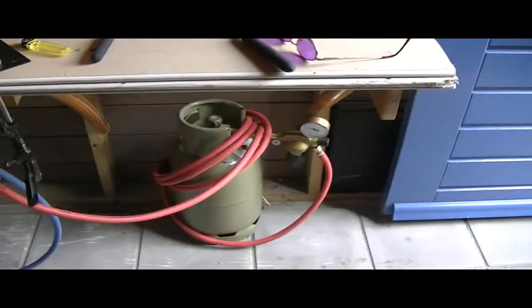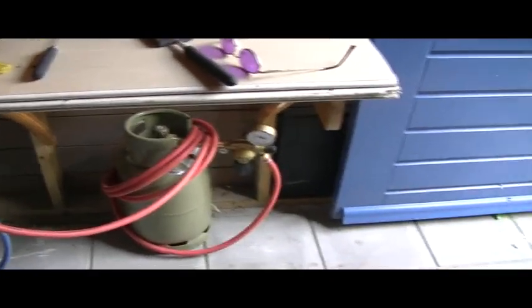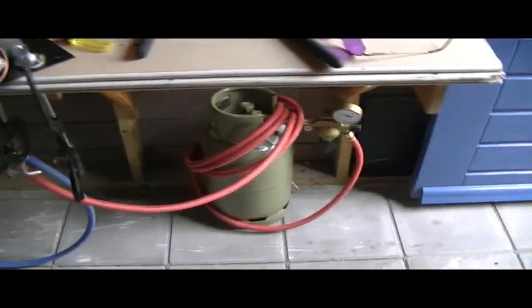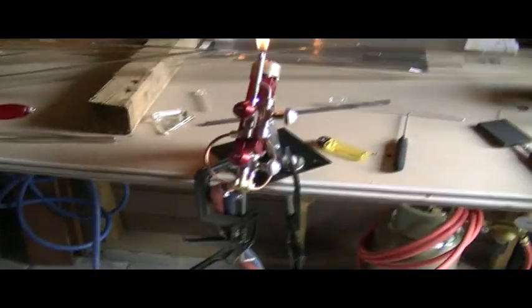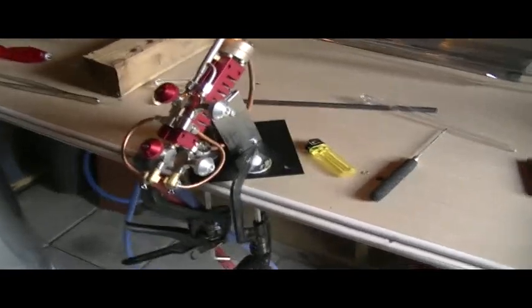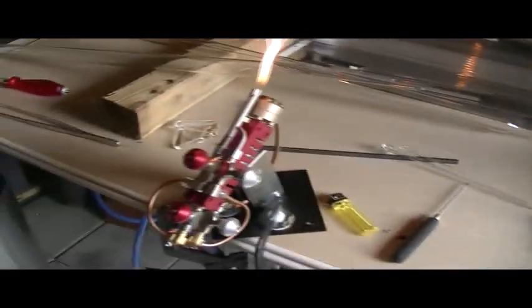So I have the propane over there underneath with the reducer, valve, and the whole thing. The torch itself is clamped to this board, which is gypsum, should be quite fireproof.